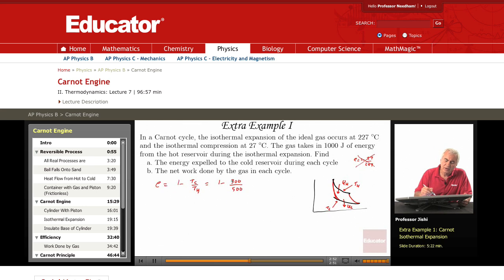So this is 1 minus 3 over 5, which is 0.4. So the efficiency of the Carnot engine is 0.4. Of course, if you want to be extremely accurate, you should write 300.15 or 500.15, but that's unnecessary.